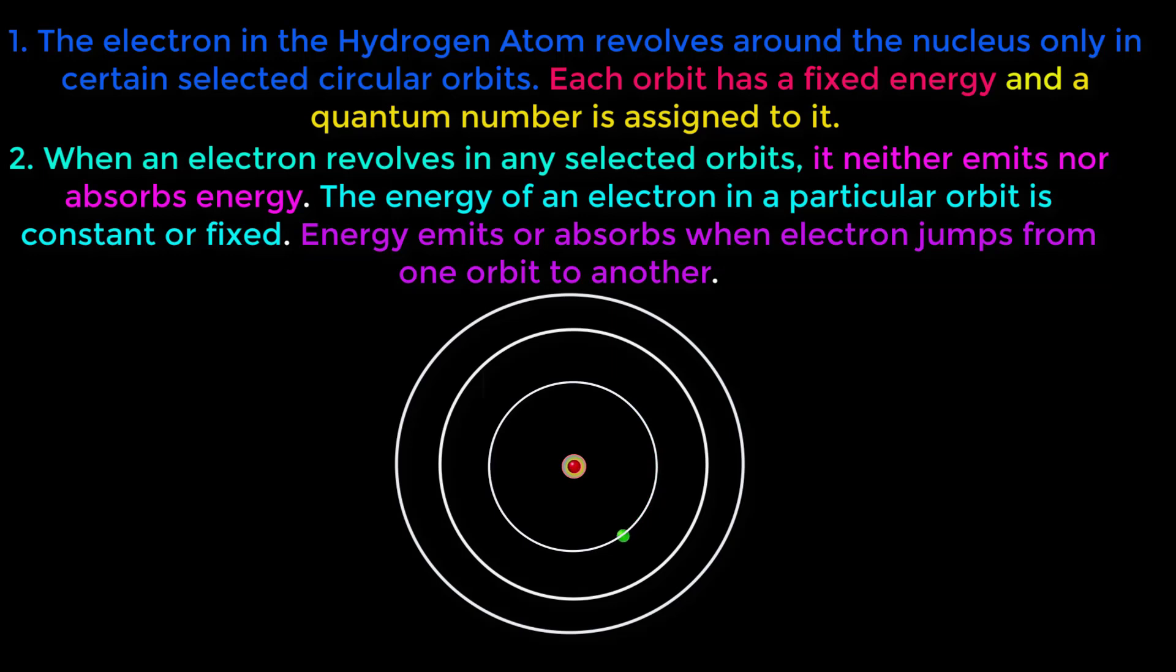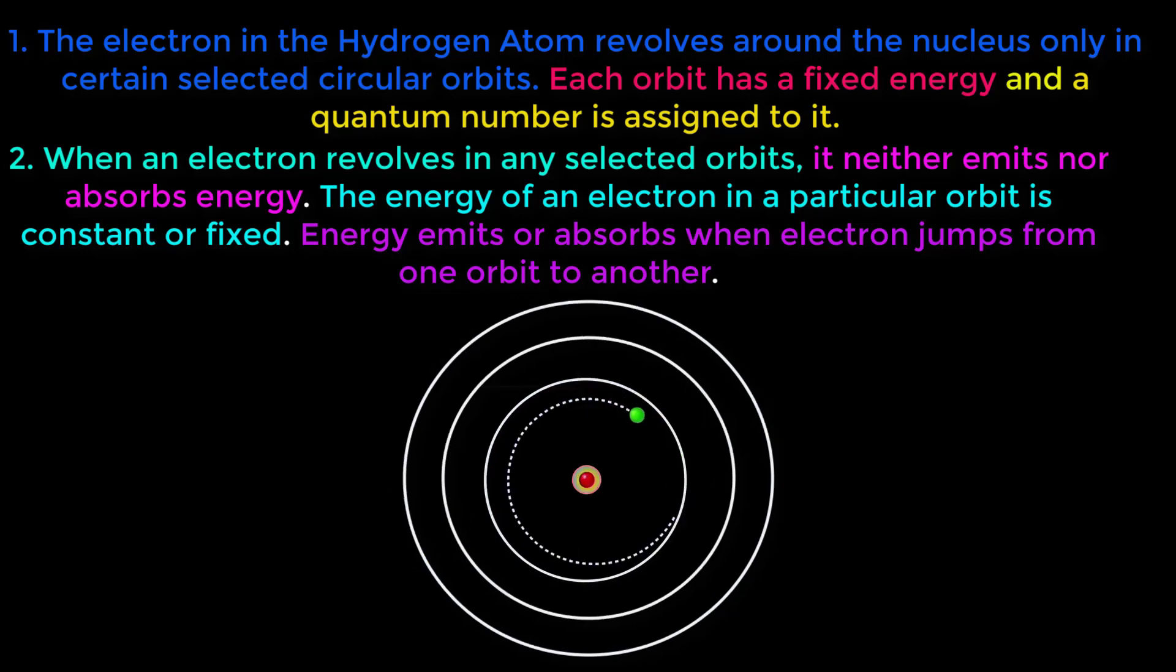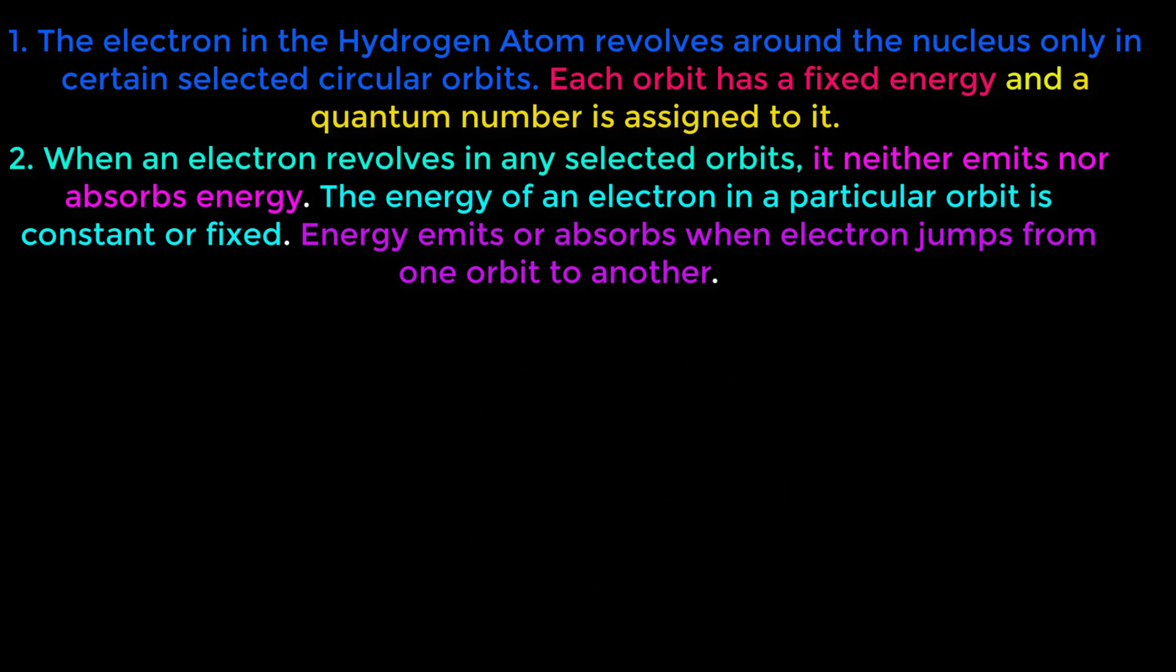See, electron is revolving in this first orbit. For this revolving electron, this orbit is fixed. According to Rutherford's atomic model, we know that while electron revolves, it continuously radiates energy. Bohr rectified this concept.